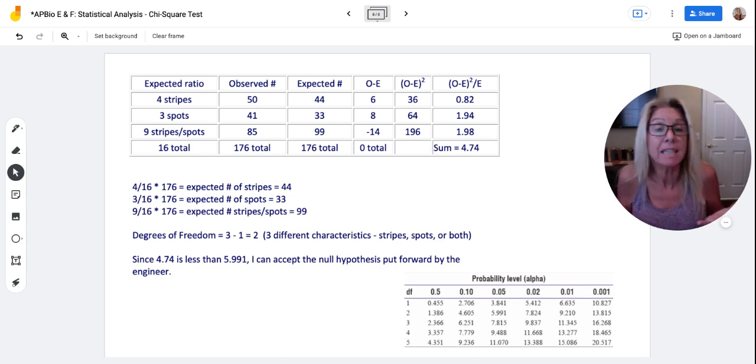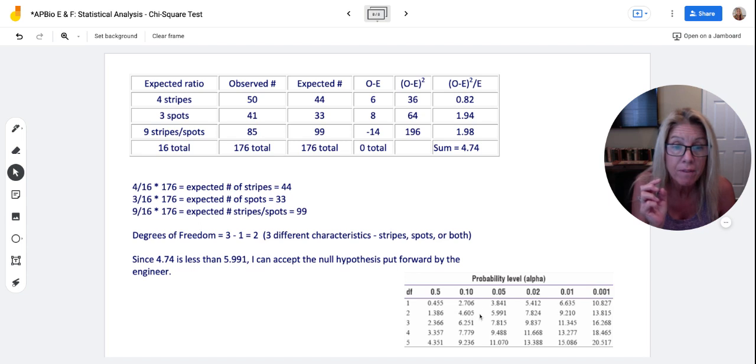I need to know, is that significant? So here's yet another table how something could appear. I have three choices, so I have two degrees of freedom. So I'm going to look here in the two degrees of freedom range, and I'm looking for the number 4.74.